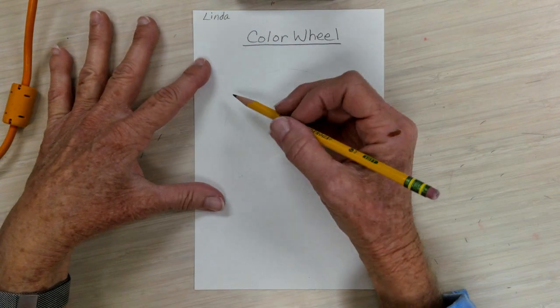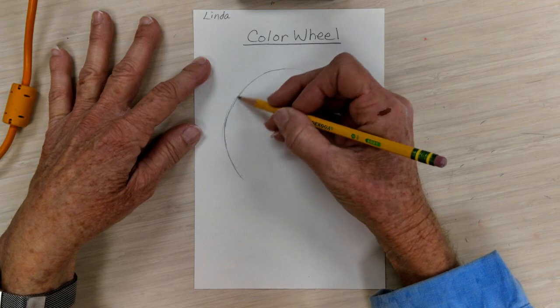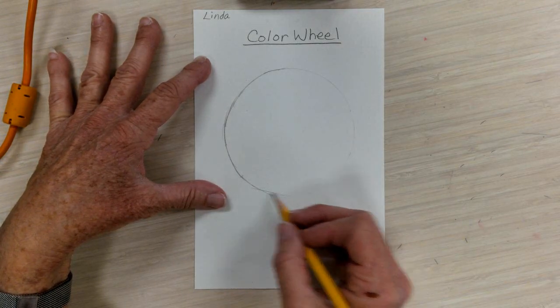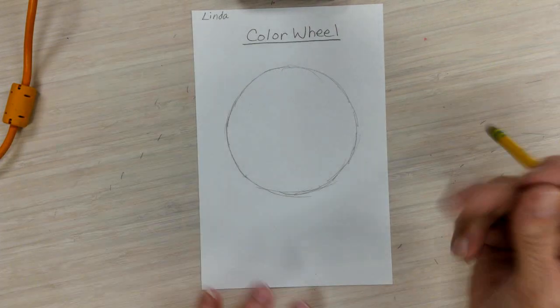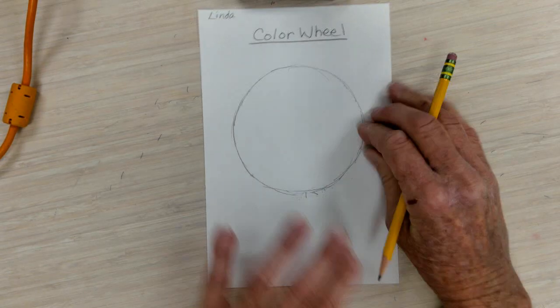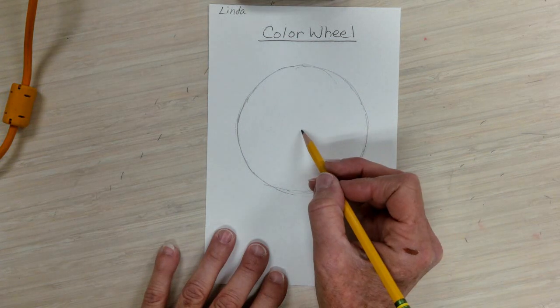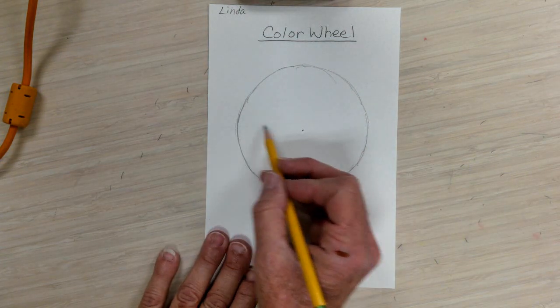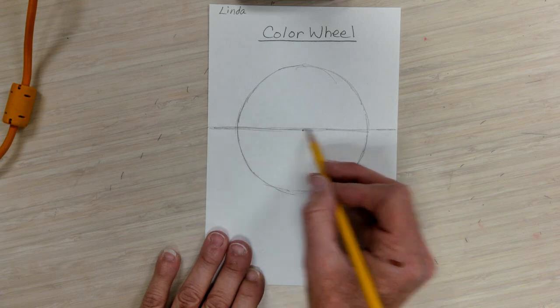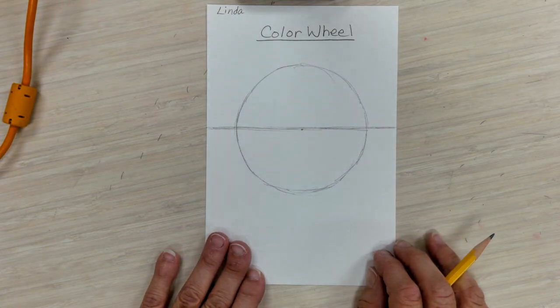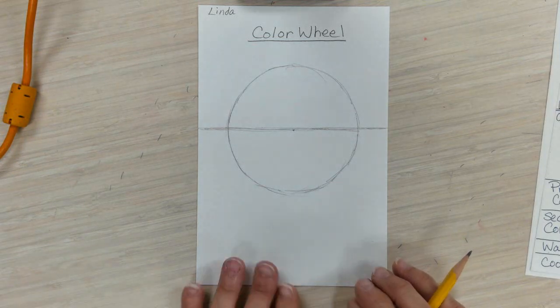Our next step is to draw a circle. Now you want to draw it in about the top two-thirds, and it doesn't have to be a perfect circle. Nothing has to be perfect. Now, once you get your circle done, you're going to be drawing a horizontal line. So try to find about the middle of your circle, and we're going to just draw a straight line across from one side of our paper to the other, cutting our circle into two halves.